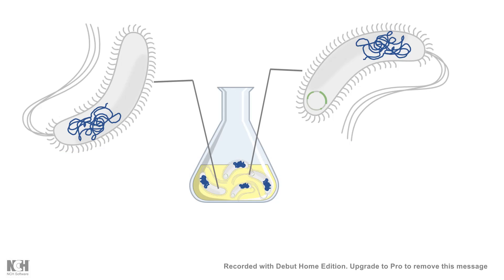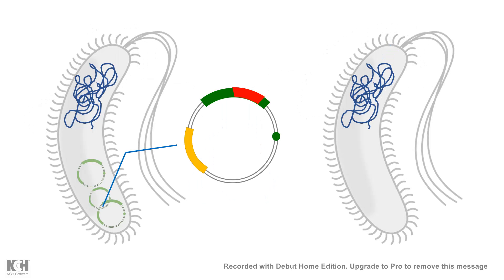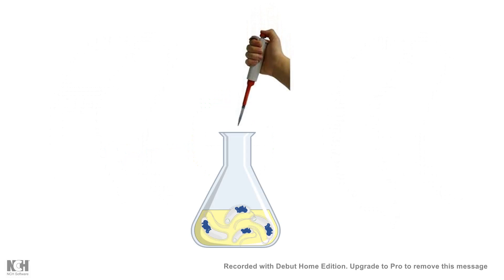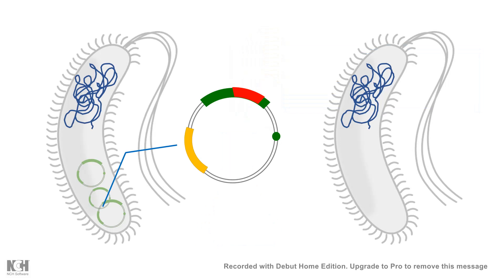Once the bacteria grows, we can isolate the plasmid and retrieve our gene of interest. However, there is a problem: some bacteria may take up the plasmid and some may not. To identify which bacteria contain our gene of interest, we need selectable markers or resistance markers to kill those bacteria which don't have the plasmid. That is why we put an antibiotic resistance gene as a selectable marker — when antibiotics are added to the culture media, only those bacteria which carry the antibiotic resistance gene inside the plasmid will survive, and the others will die.